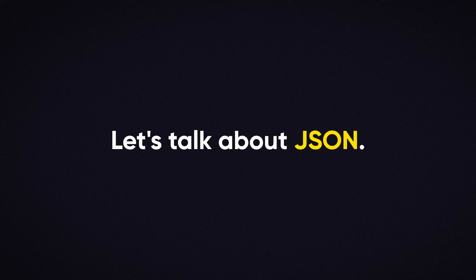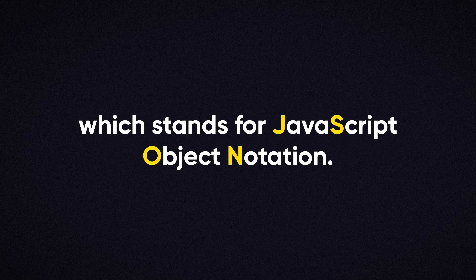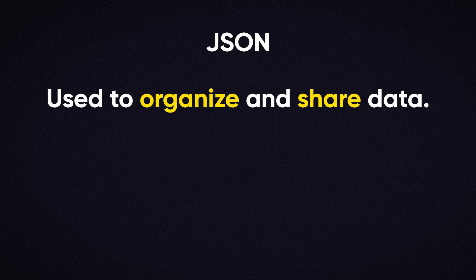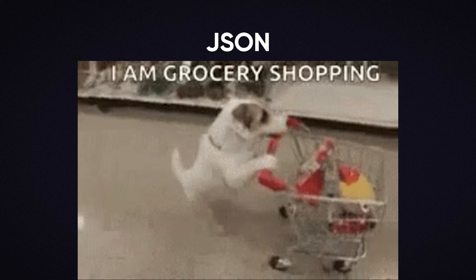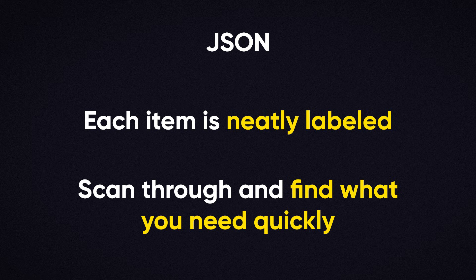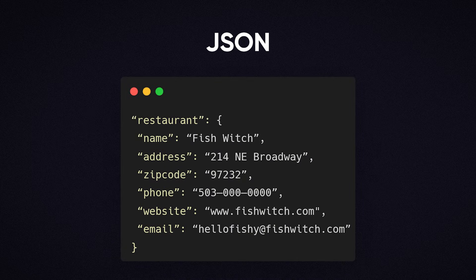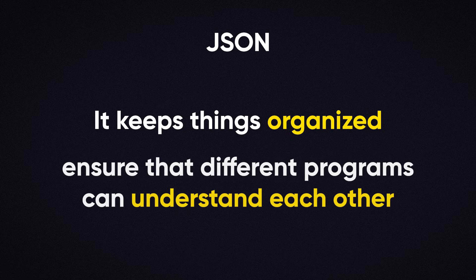Speaking of data, let's talk about JSON. When an API sends data, it usually comes in a format called JSON, which stands for JavaScript Object Notation. JSON is a lightweight way to organize and share data. It's easy to read and works well with many different programming languages, making it the standard for modern APIs. Think of JSON like a grocery list — each item is neatly labeled and you can quickly scan through and find what you need. A JSON object for a restaurant, for example, might look something like this. It's structured, clear, and easy for applications to read. That's why APIs use JSON — it keeps things organized and ensures that different programs can understand each other, even if they're built with different programming languages.